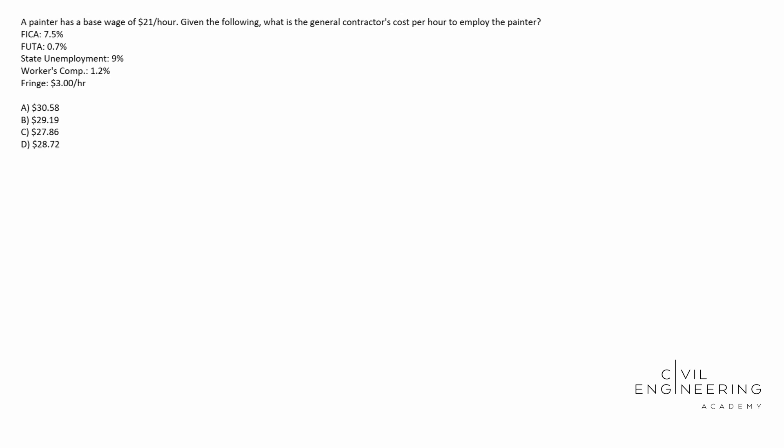So today we have sort of a project management problem and we're going to be estimating the cost of an employee. A painter has a base wage of $21 an hour. Given the following, what is the general contractor's cost per hour to employ the painter? And then we see our FICA, we see our FUTA, we see our state unemployment, workers' comp, and our fringe. And then we see our four options there in dollars.